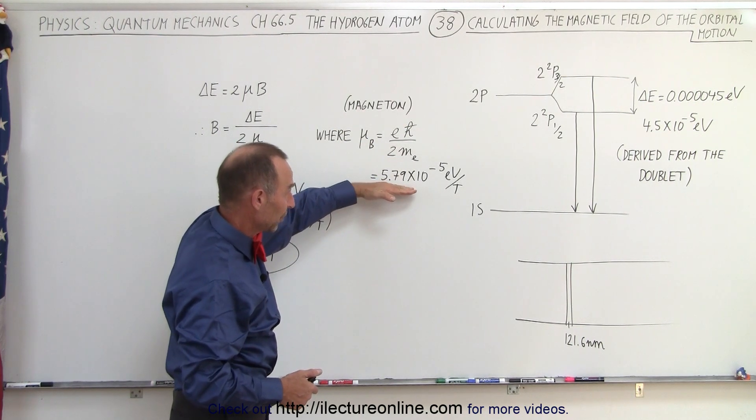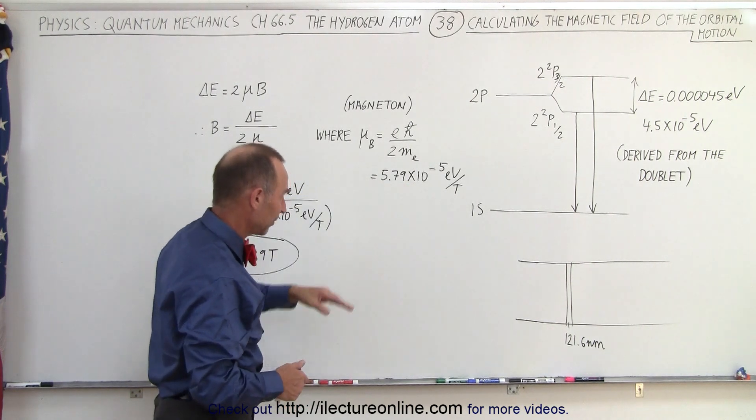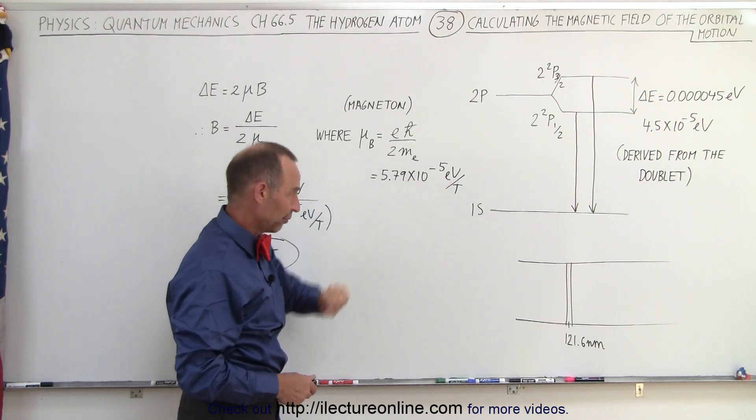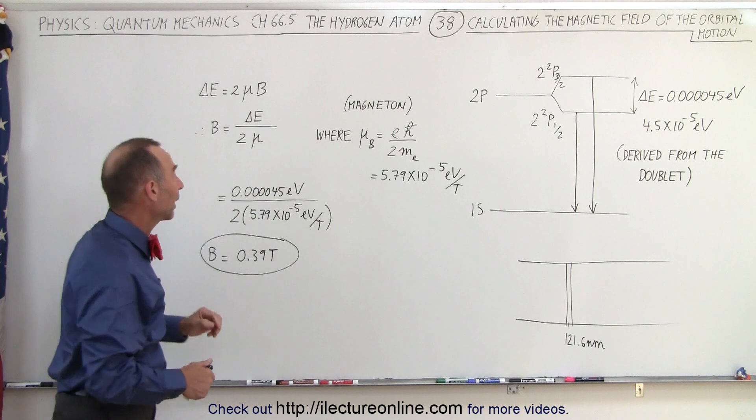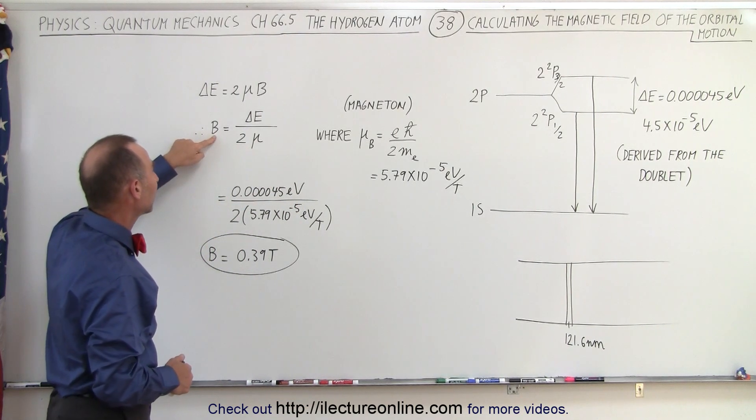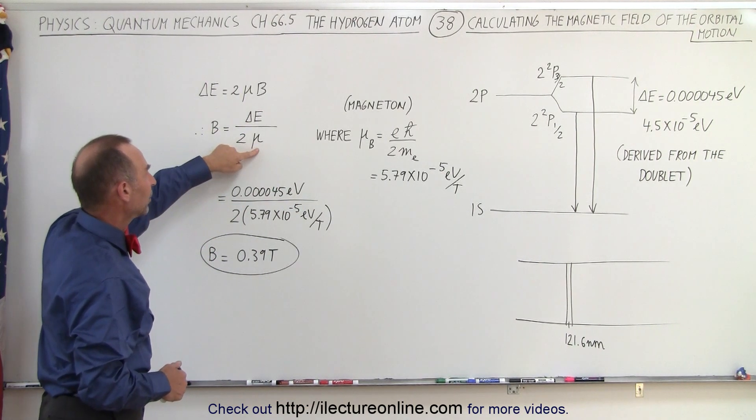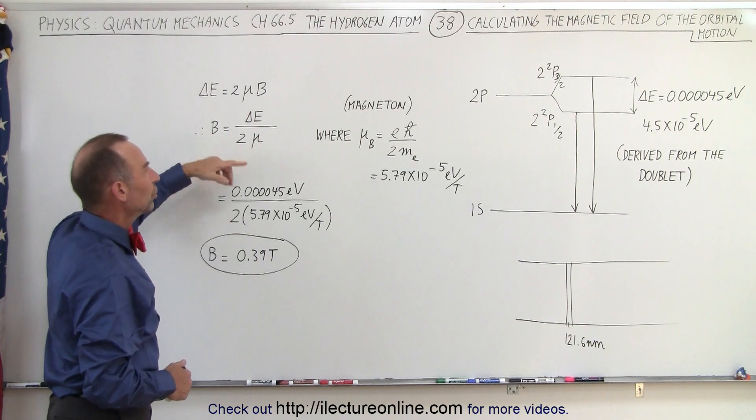It ended up being this number here: 5.79 times 10 to the minus 5 electron volts per tesla. So all we had to do then is calculate the magnetic field by taking the energy difference divided by the Bohr Magneton divided by 2.